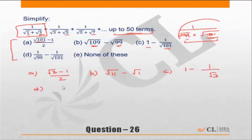Choice D: 1 upon under root 99 and under root 101. So choice D would be 1 upon under root 1 minus 1 upon under root 1 plus under root 3. And E in any case is none of these.